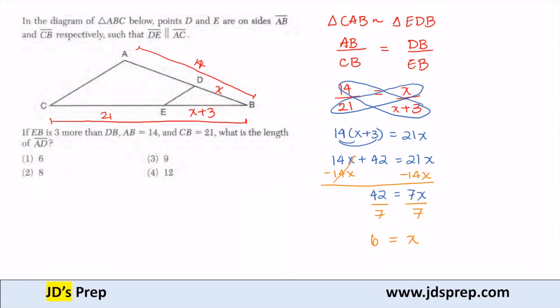But remember that's not our answer. We're trying to find AD. So AD is just this measure here. We just found X is 6, so this side is 6.